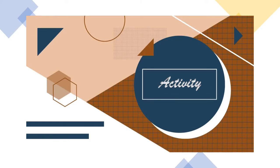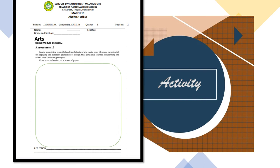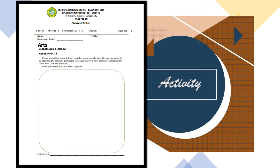Congratulations! Now that you've finished your learnings on the elements of arts, you may proceed to Activity 1. Create something beautiful and useful — an artwork that makes your life more meaningful by applying the different elements of arts and principles of design, using the talent God has given you. Write a reflection on a sheet of paper. You may paint, draw, and add colors. Make sure the elements of arts are visible in your output, then send your activity to your MAPEH teacher.